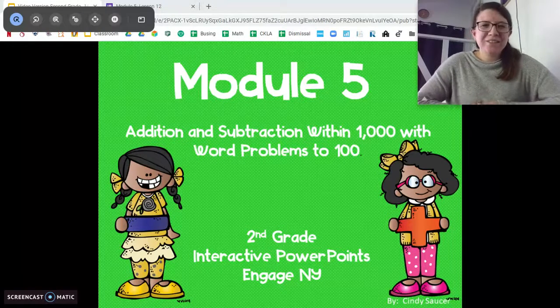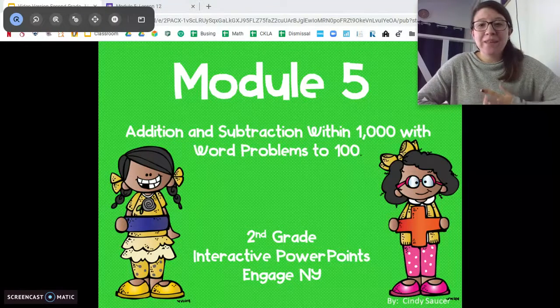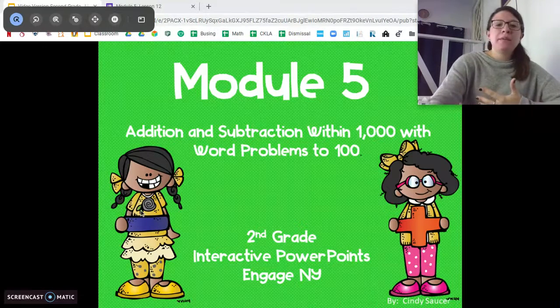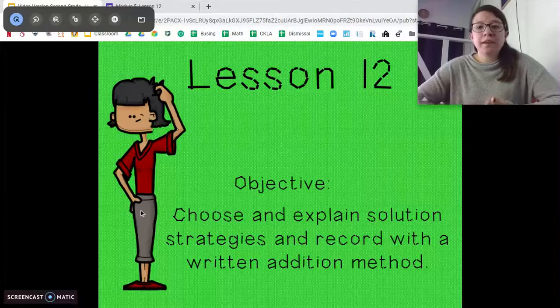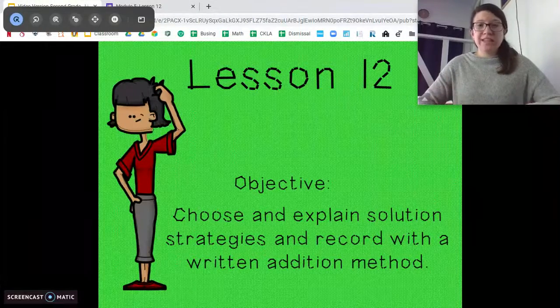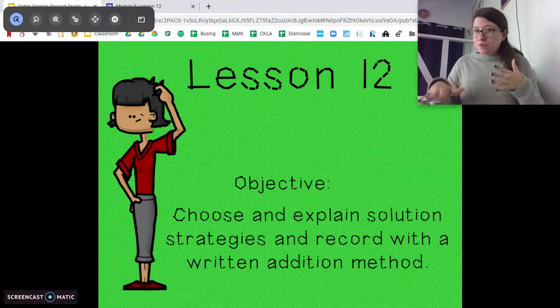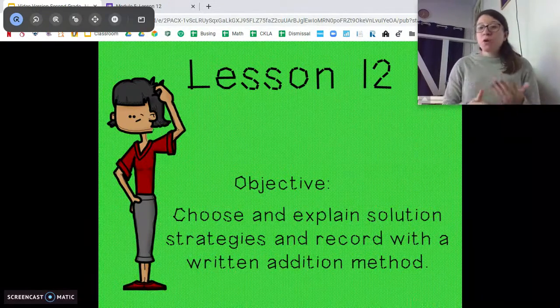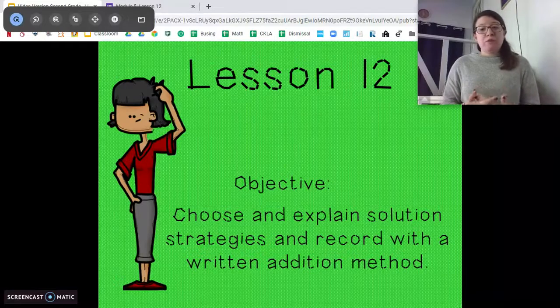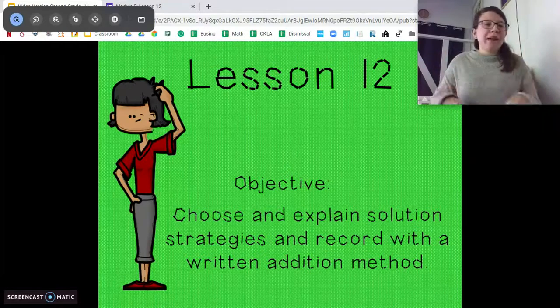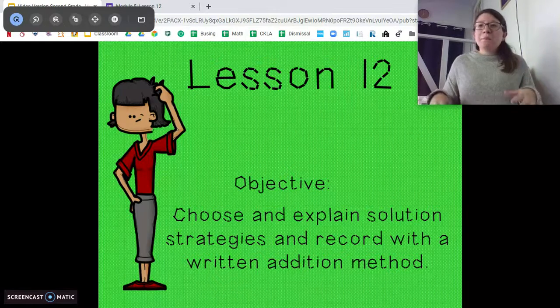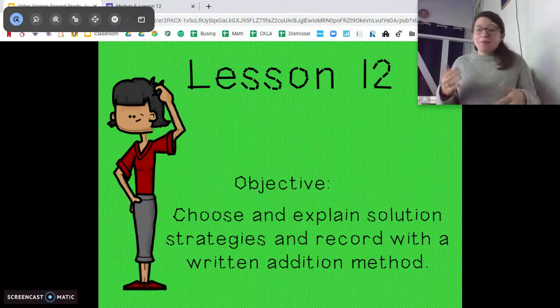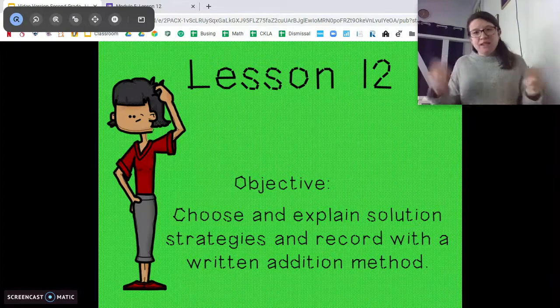Hi second graders! Ms. DiOrio here from Citizenship Academy with Lesson 12. For this one you're gonna want a paper and something to write with because we're gonna be working with all of the strategies we've learned and kind of choosing the best one that works for you. It might be the best one based on the problem or it might be the one that you are most comfortable with. If you like the vertical method and you got that down pat, use the vertical method. But sometimes for different problems it might be easier to use the arrow way. It might be easier to use mental math. That's what we're gonna talk about today.